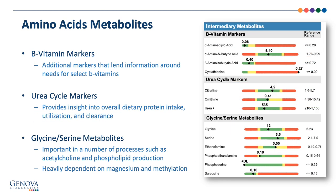On the right-hand side of the amino acid page are the intermediary metabolites. The B vitamin markers lend additional support to the potential need for select B vitamins, with many analytes coming from pathways dependent on vitamin B6 and B12. The urea cycle markers provide insight into overall dietary protein intake, utilization, and clearance, as this is the system used to detoxify ammonia from amino acid breakdown. The glycine and serine metabolites section includes direct measurements of glycine and serine and relates to processes such as acetylcholine and phospholipid production, heavily dependent on magnesium and methylation cofactors.